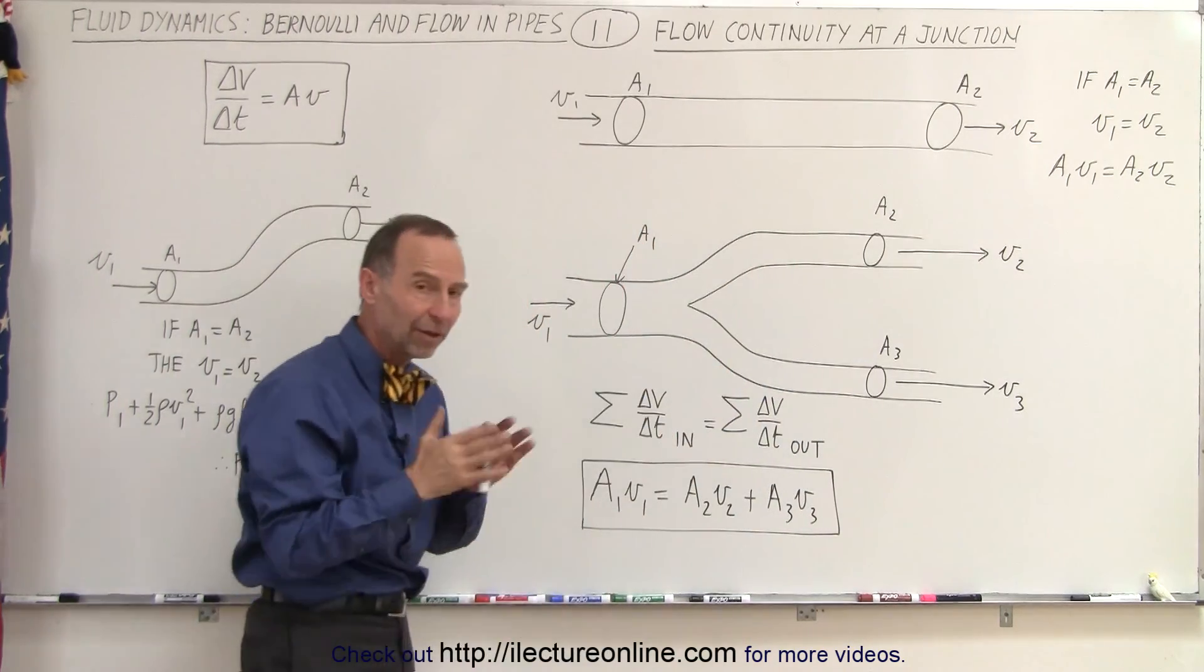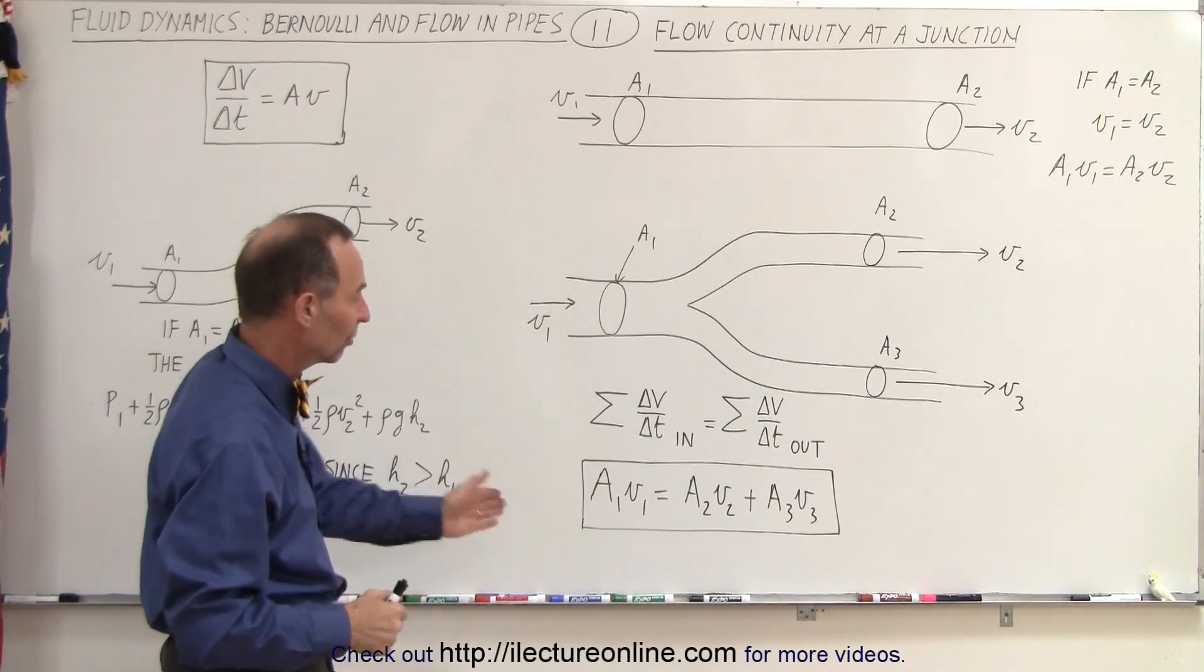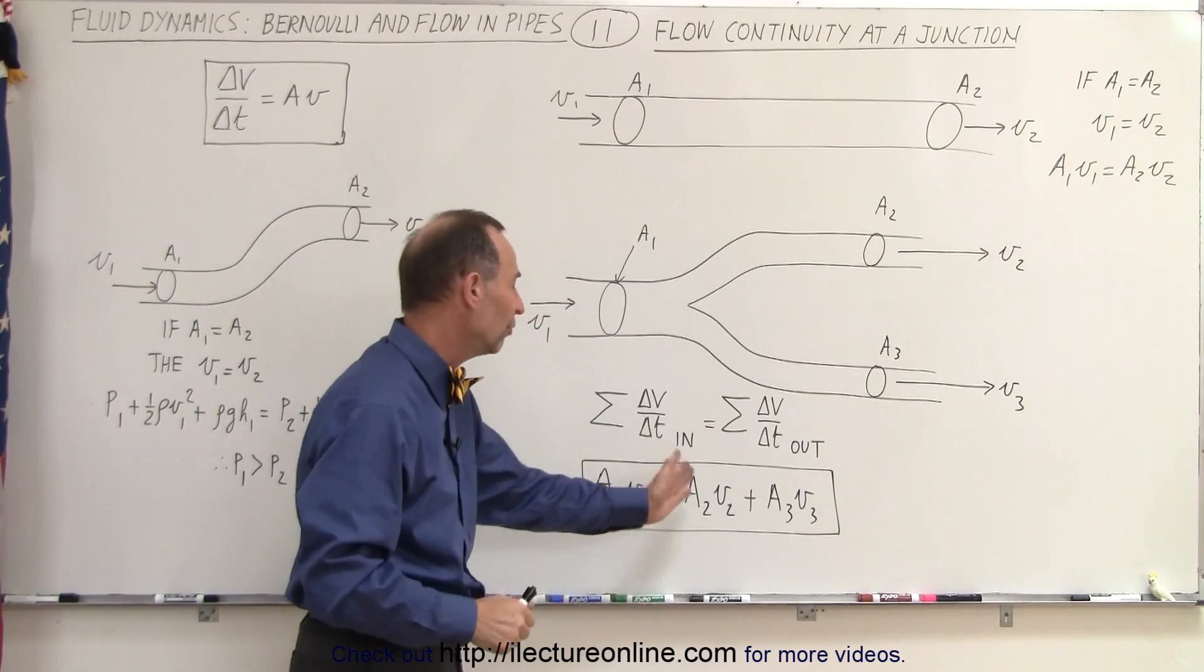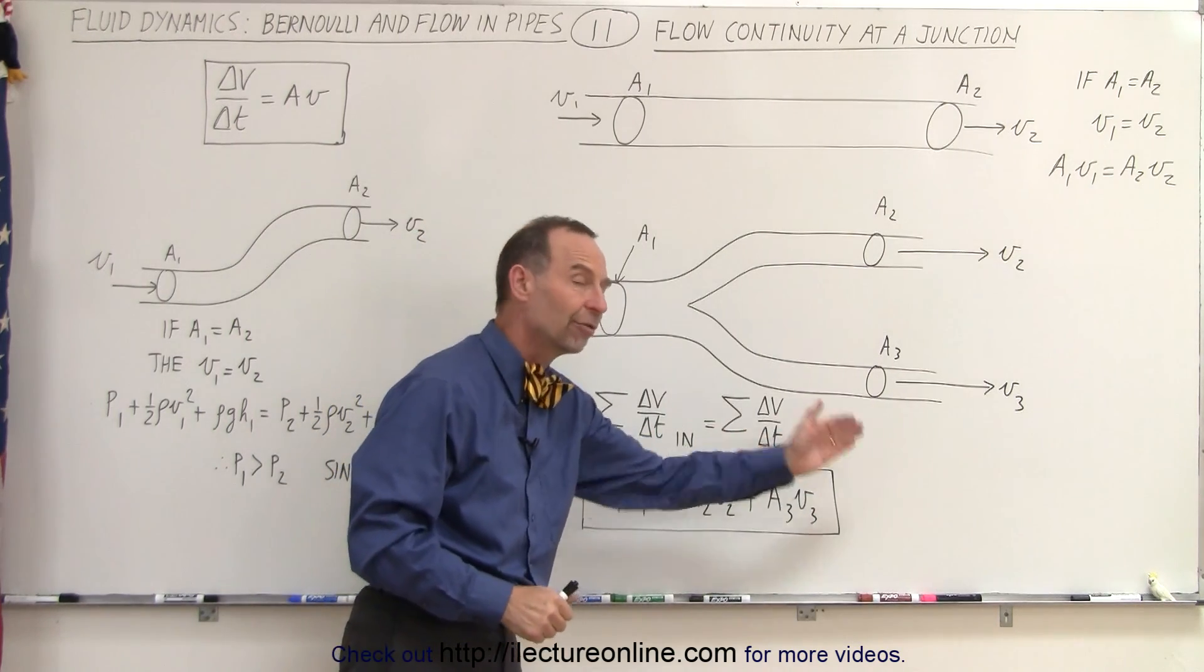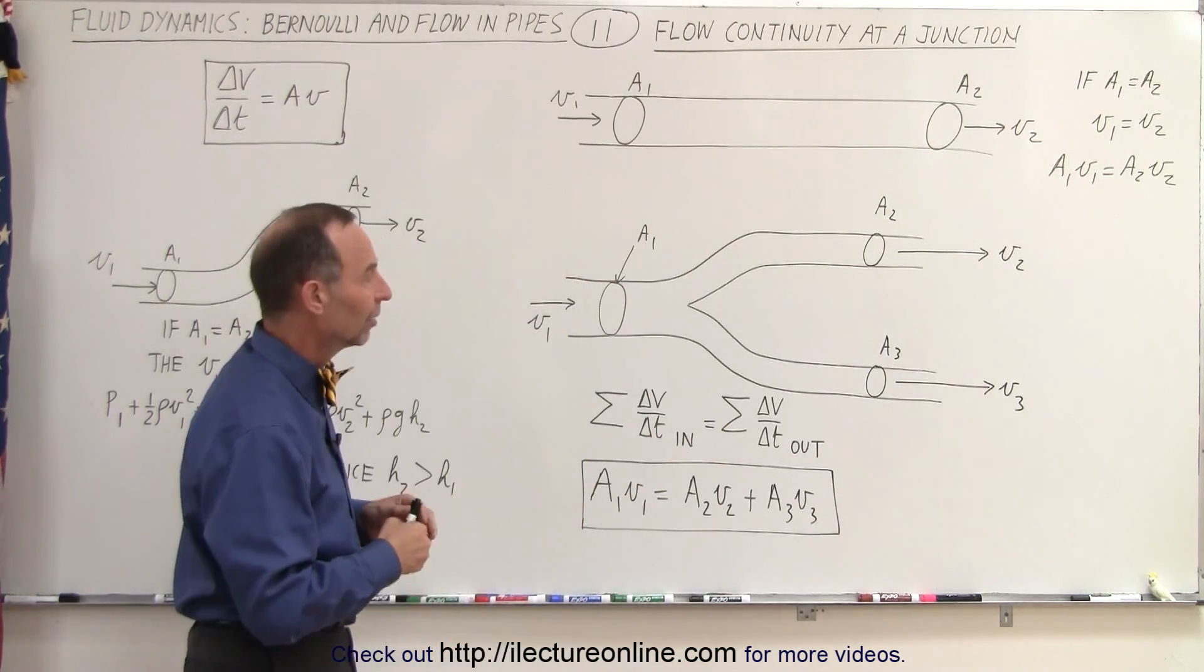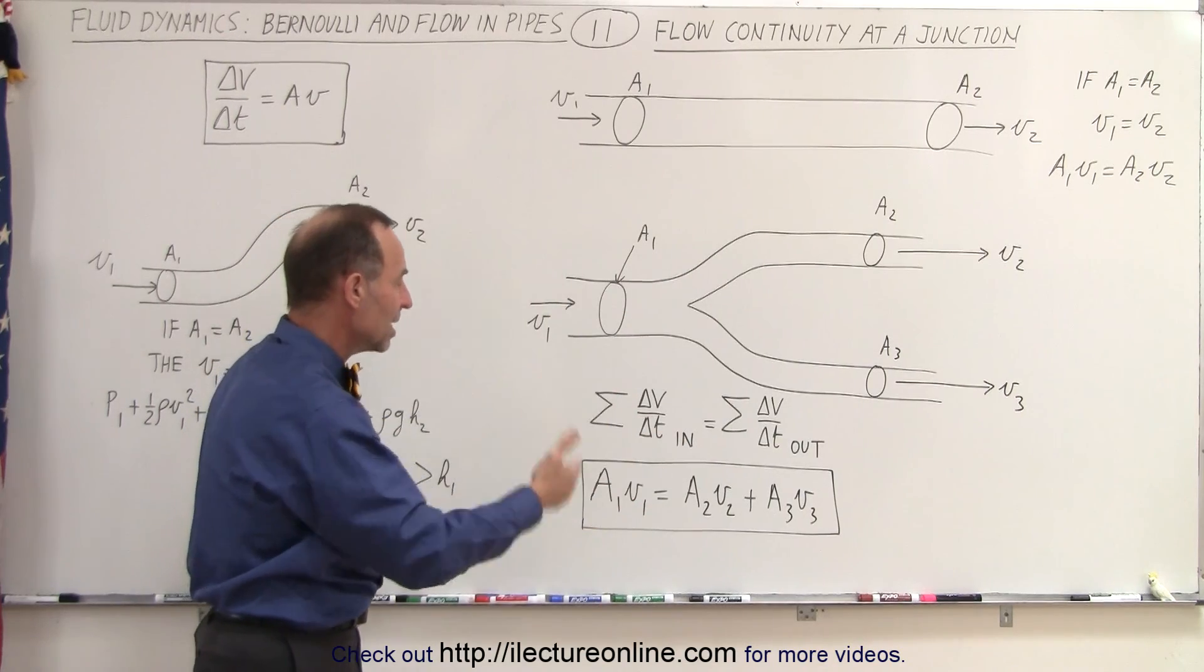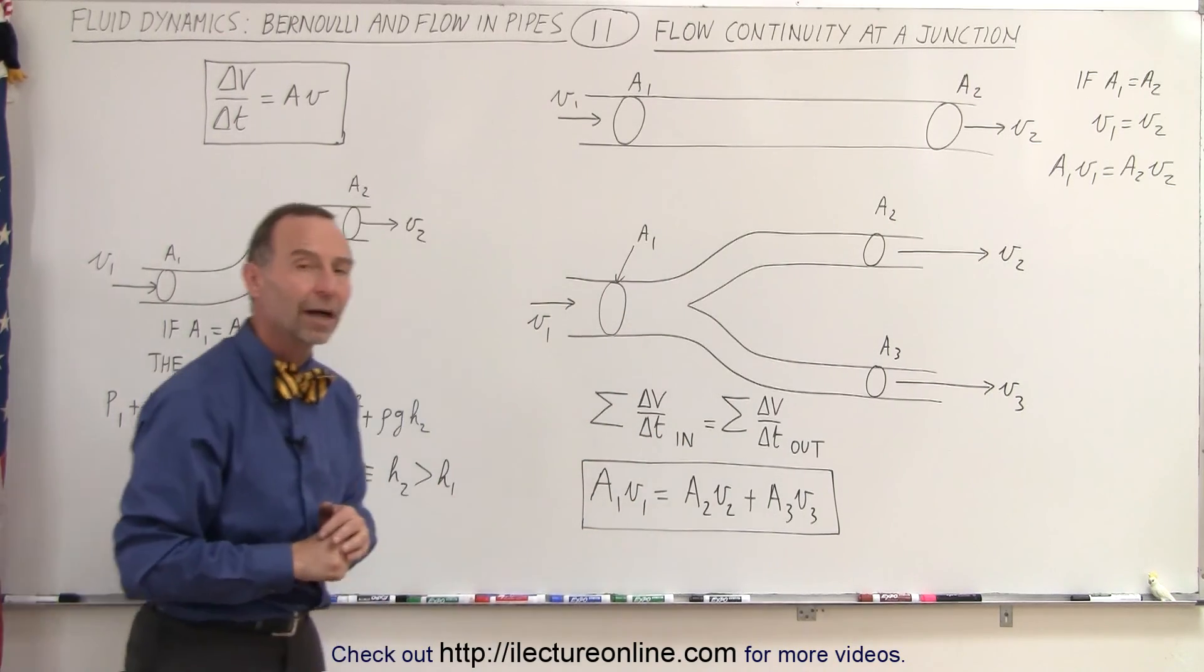Let's say there's three or four or five pipes coming from the junction. We simply would add up all the products of A2V2, A3V3, A4V4, and so forth, until the sum of all the ones on the right equal A1V1 on the left.